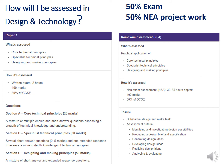How will I be assessed? You will have a written paper consisting of a 2-hour exam, worth 50% of your grade, split into three sections: Section A — core technical principles, worth 20 marks; Section B — specialist technical principles, worth 30 marks; and Section C — designing and making principles, worth 50 marks. The other half is your NEA: a substantial design and make project taking up to approximately 35 hours of work, where you identify your own possible projects.